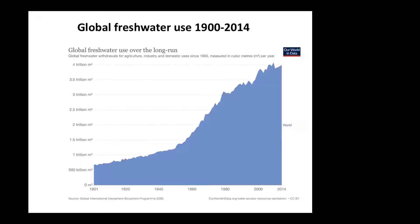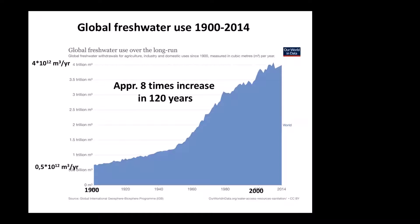Coming to freshwater: since 1900, global water use has increased eight times. That is why water shortage will probably become the first really limiting factor for global society. Everyone will have to consider more in depth the use of water and how it is connected to the production of goods and services.